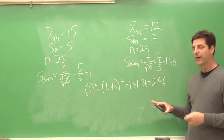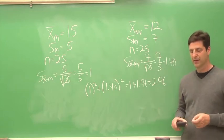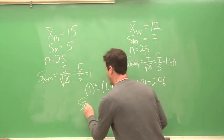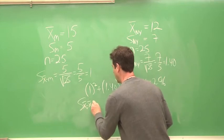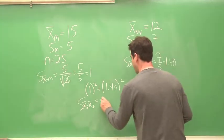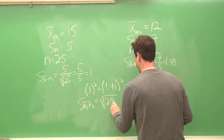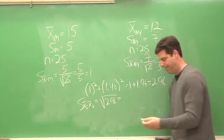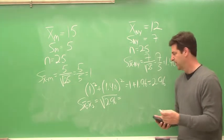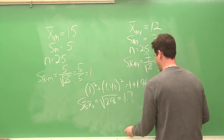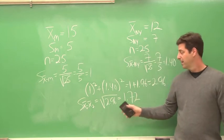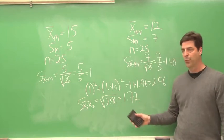Okay, so the sum of our squared standard errors is 2.96, and then to find the standard error of the difference between the means, we take the square root of that. And we have 1.72. So the standard error of the difference between the means is 1.72.